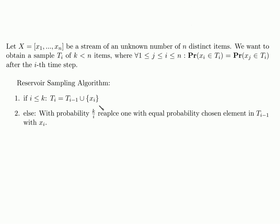The algorithm works as follows. If we are at a time step that is smaller than the size of our sample, we just put this new item into our sample and be done with it. Every item at this point is in the sample with probability 1. Else, with probability k over i, replace one of the items in our sample with probability 1 over k. We only choose to replace one of those items with probability k over i, but if we have chosen to do so, we will pick one of the items in the sample with equal probability. Remember, k is the size of the sample.